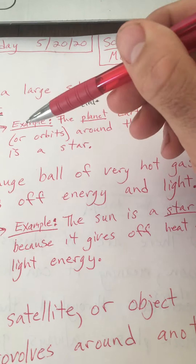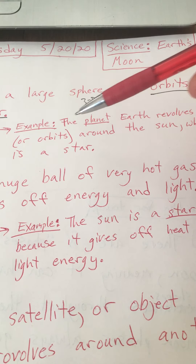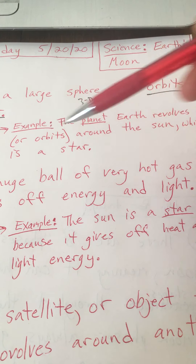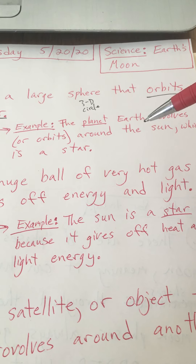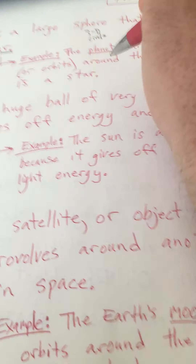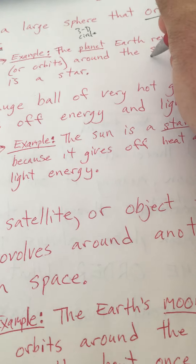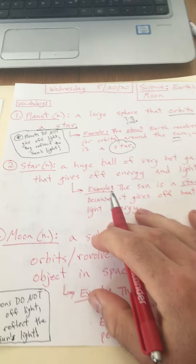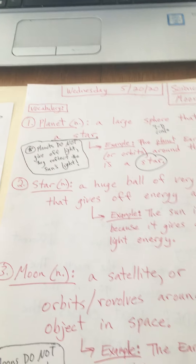Here's an example of planet: the planet Earth revolves or orbits around the sun, which is a star. So the sun is actually a star. We're going to talk more about that in a minute.